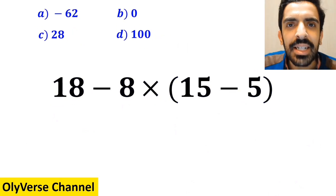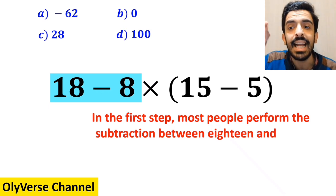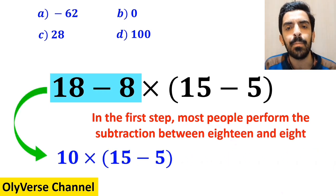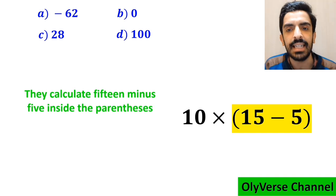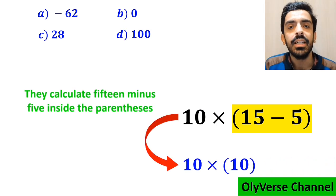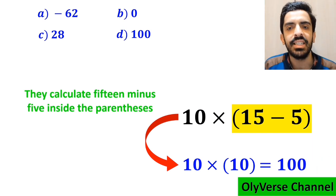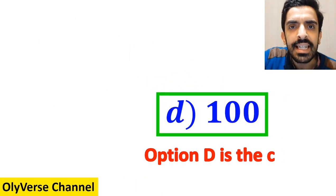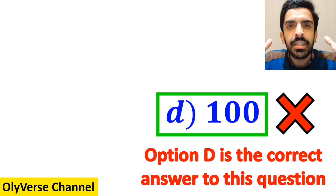Let's dive in and break it down step-by-step together. In the first step, most people perform the subtraction between 18 and 8, which is highlighted in blue. So this expression simplifies to 10 multiplied by 15 minus 5 inside the parenthesis. In the next step, they calculate 15 minus 5 inside the parenthesis, which becomes 10 multiplied by 10. And finally, the value of this expression must be equal to 100. Then without any hesitation, they quickly say that option D is the correct answer to this question. However, that's definitely wrong.